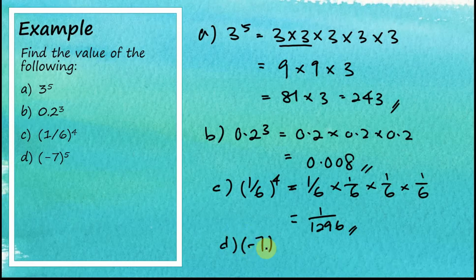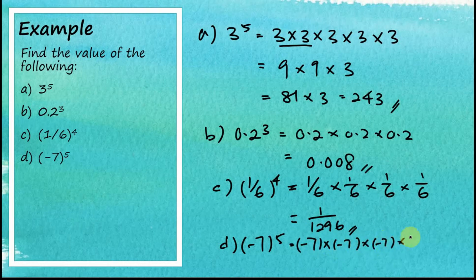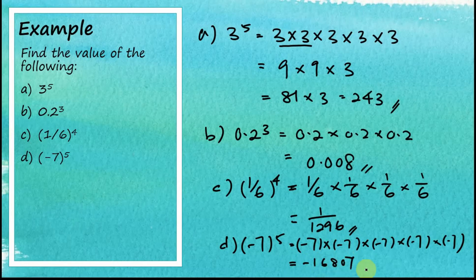For the last one, part d: negative seven to the power of five equals (-7) × (-7) × (-7) × (-7) × (-7). Using your calculator, you should get negative 16807. That's how we find the value of an index number.